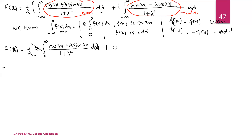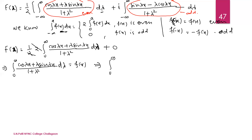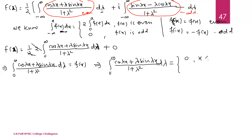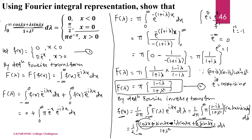The question asks to use the integral representation and show the result. There are three terms on the right hand side: for negative x, for positive x, and exactly at x = 0. We already have the negative and positive cases. Now we find what happens at x = 0.